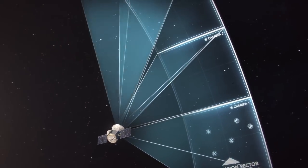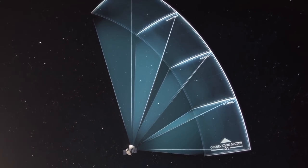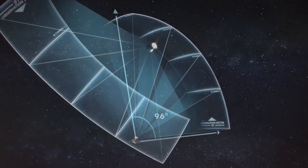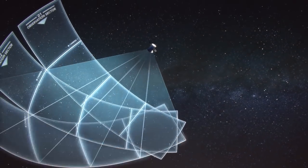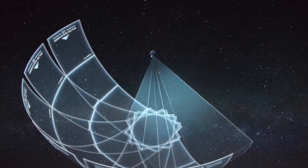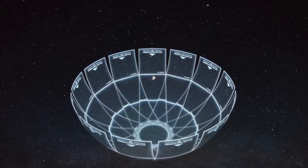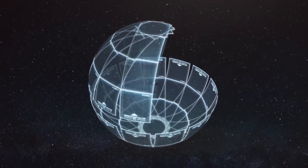TESS has four of these cameras arranged to view a long strip of the sky called an observation sector. TESS will watch each observation sector for about 27 days before rotating to the next. It will cover the southern sky in its first year, and then begin scanning the north.